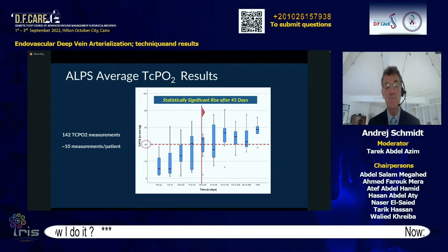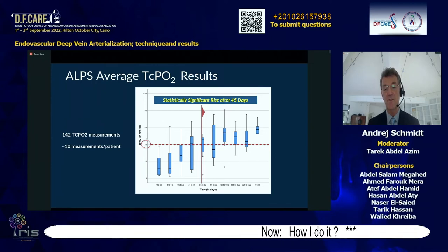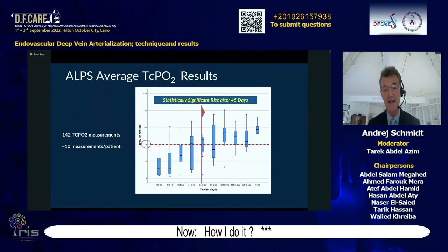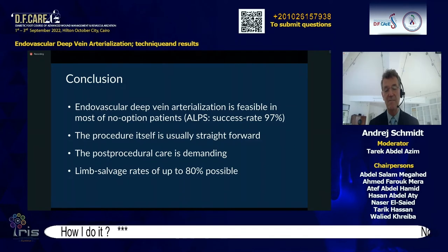Data from Steven Kum from Singapore, working with LimFlow and Roberto Ferraresi, shows how transcutaneous oxygen pressure (TcPO2) is low through the first weeks — a difficult period — but then slowly rises. Once you reach four to five weeks, you are on the safe side. In conclusion, endovascular DVA is feasible in most no-option patients, with 97% technical success, the procedure is usually straightforward, post-procedural care is demanding, and limb salvage can be quite impressive at up to 80%.